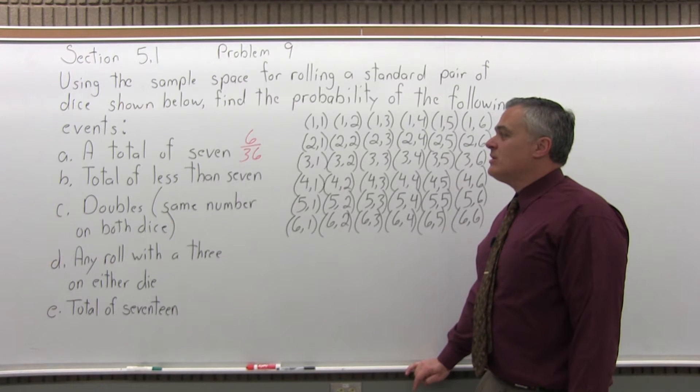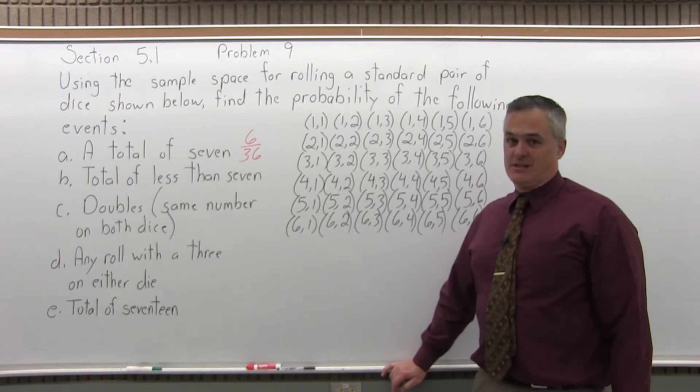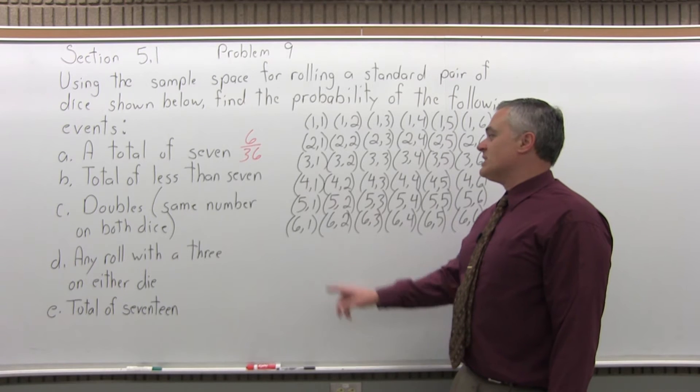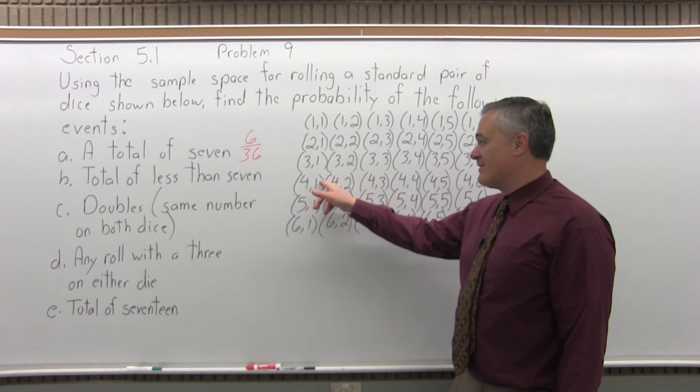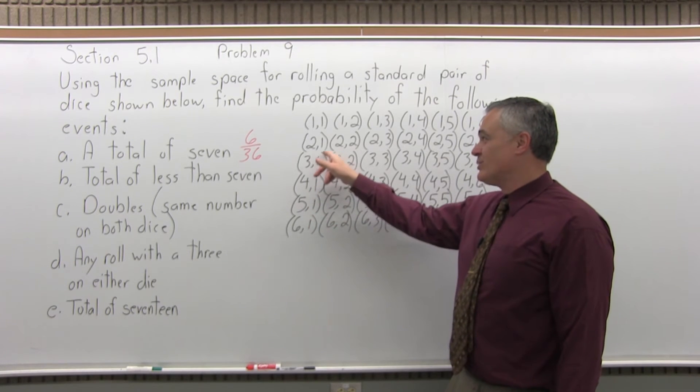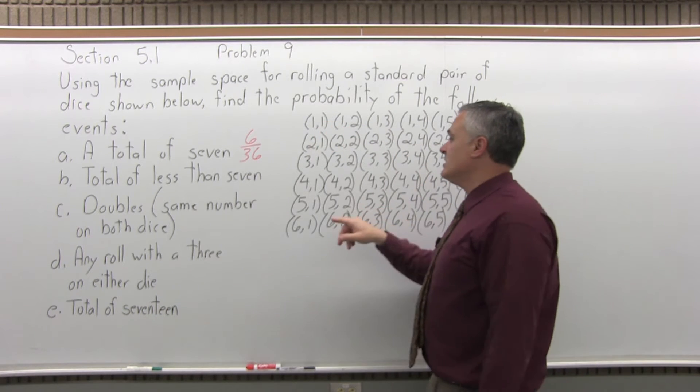So next, a total of less than 7. So say a total of 6, a total of 5, a total of 4, a total of 3, or a total of 2.